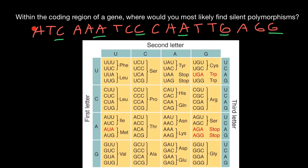Changes to the first two positions in a codon would lead to a change in amino acid, a change in the protein sequence, and a change in the function of this protein or enzyme. In most cases, these are deleterious changes that are not tolerated by the organism and lead to reduced fitness of the organism.